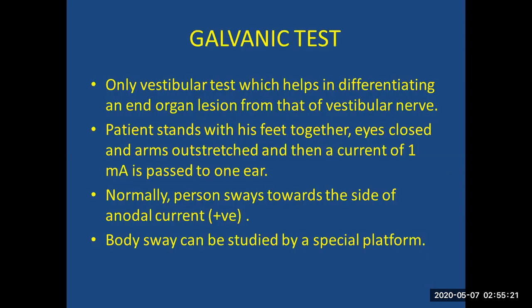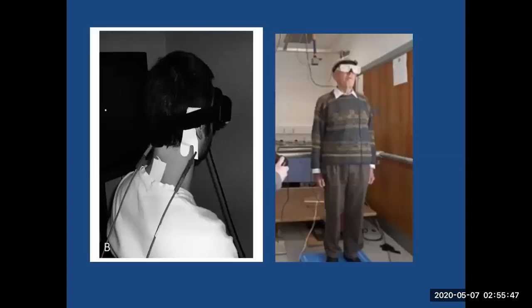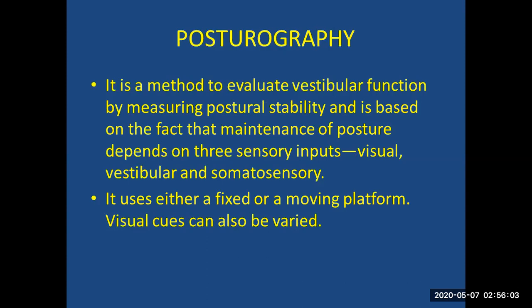Galvanic test: This is the only vestibular test that helps differentiate an end organ lesion from a vestibular nerve lesion. The patient stands with feet together, eyes closed, and arms outstretched, and a current of 1 milliampere is passed to one ear. Normally the person faces toward the side of the positive electrode. Body sway can be studied using a special platform such as a dynamic posturography test.